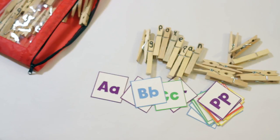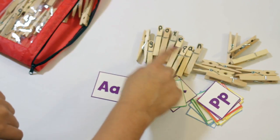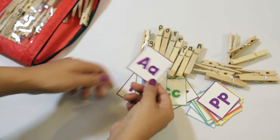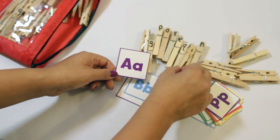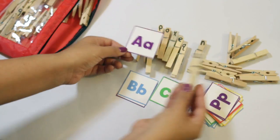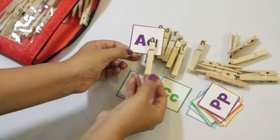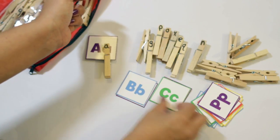What the child will do is they will find the corresponding clothespin that matches the correct letter card. That's for learning the alphabet, and then they use their fine motor skills to push open that clothespin and put it on to match. They'll go through the whole alphabet until they're finished.